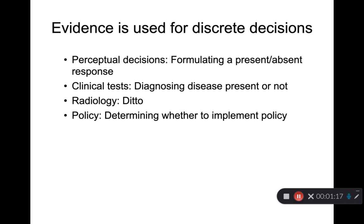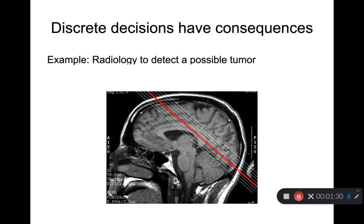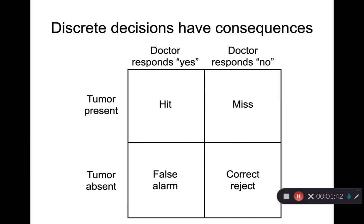But evidence is used for discrete decisions, often binary decisions: Is the stimulus there or not? Does the patient have the disease or not? Did the policy benefit the population or not? And these discrete decisions have consequences. For example, were this a clinical MRI scan and a radiologist was looking for a smudge indicating the presence of a tumor, the doctor could say yes or no. This leads to two correct answers — a hit, where the doctor says yes and the patient is sent off for surgery, or a correct rejection where the patient relaxes. But there are also mistakes: a false alarm where the doctor says yes when they don't have it, causing unnecessary tests and stress, or worst of all, the doctor misses the evidence of a tumor, sends the patient home, and the next time the patient sees the doctor the tumor has grown.